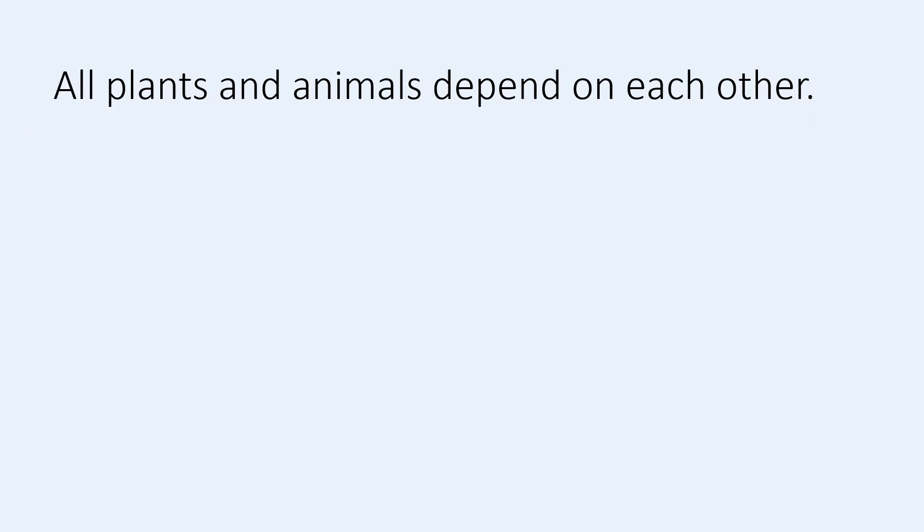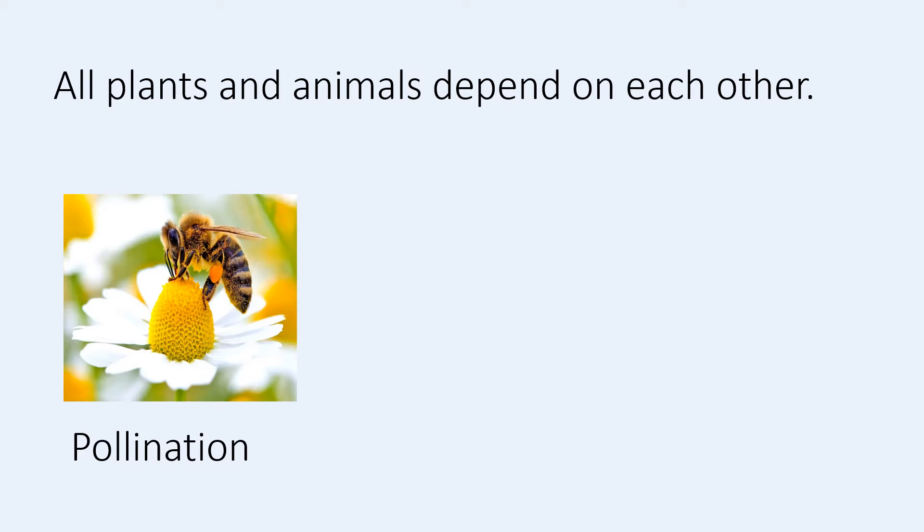Before we start learning about biomes, you should pause the video and write down all of the reasons that animals depend on plants and all of the reasons that plants depend on animals. Every animal and plant on earth depend on each other in a balance and they depend on each other for survival. The three main things that plants and animals depend on each other for are pollination, shelter and food. So plants need animals for pollination so that they can reproduce, and animals like us need plants so that we can eat.